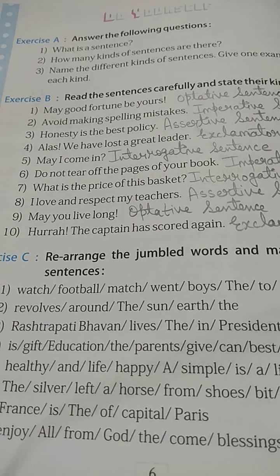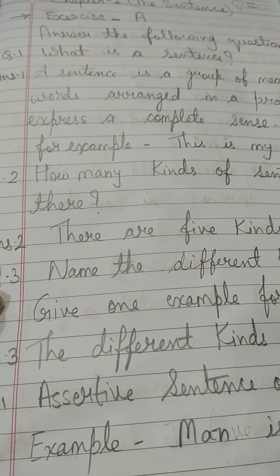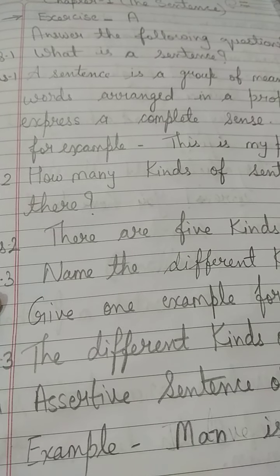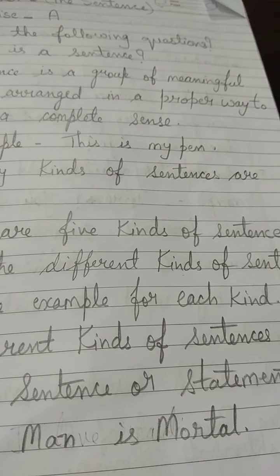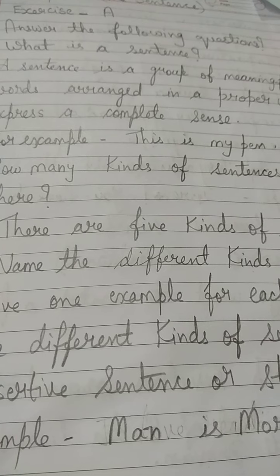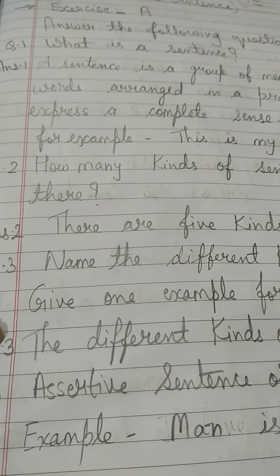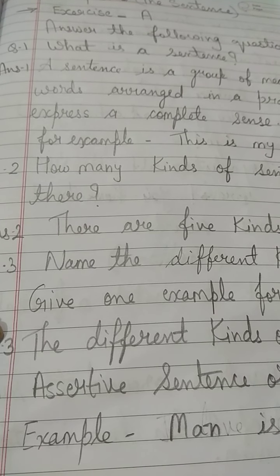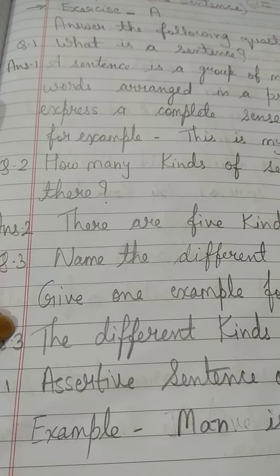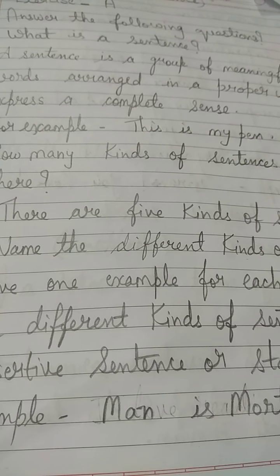Question 1: What is a sentence? A sentence is a group of meaningful words arranged in a proper way to express a complete sense. For example: 'This is my pen.'